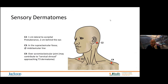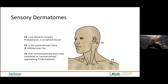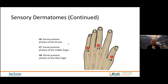Running through the sensory dermatomes: C2 is one centimeter lateral to the occipital protuberance, two centimeters behind the ear. C3 is the supraclavicular fossa at the midclavicular line. C4 is over the AC joint (acromioclavicular joint) — keep in mind C4 can extend further down, even to what we'd typically call T3. C5 is the radial side of the arm at about the antecubital fossa level, just proximal to the elbow. C6 is the dorsal proximal phalanx of the thumb — dorsal surface, because the palmar surface may have calluses. C7 is the dorsal proximal phalanx of the middle finger, and C8 is the little finger.